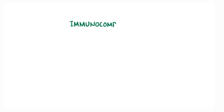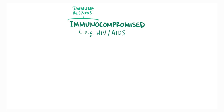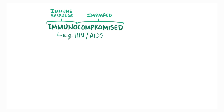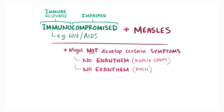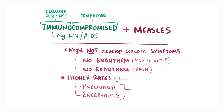For people who are immunocompromised, for example people with HIV or AIDS, their immune-mediated responses are impaired. If they get measles, they might not develop some symptoms that result from the immune system responding to the measles virus, like the enanthem or Koplik spots, or the exanthem rash. However, these people also have higher rates of pneumonia and encephalitis, which contribute to a higher mortality rate.